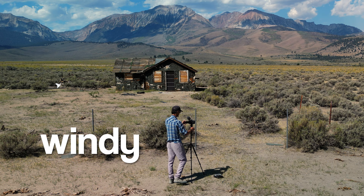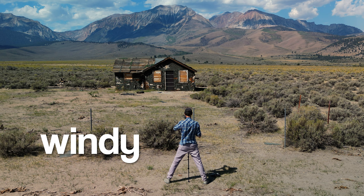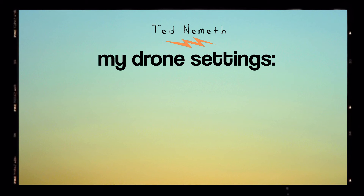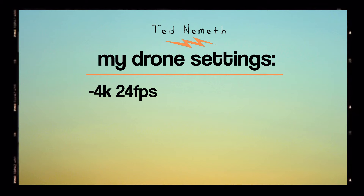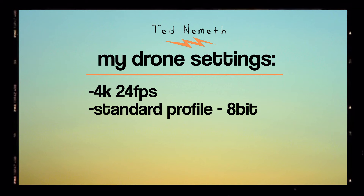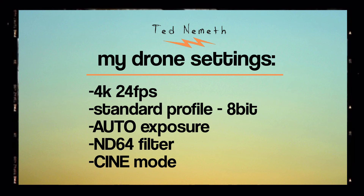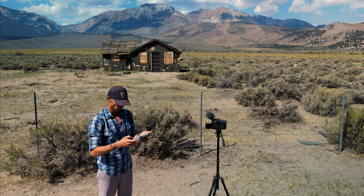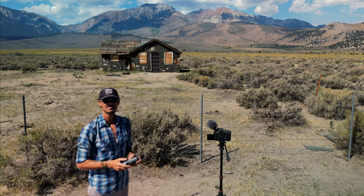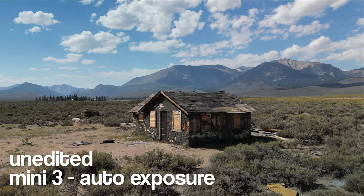It was very windy, as you can see by my Mini 3 bouncing all around — you'll notice some shaky footage in spots during this tutorial. Before we show you my favorite clip and editing tricks, I'll share all my drone settings: 4K, 24 frames per second. I shot in the standard picture profile in 8-bit — not in cine-like 10-bit because I forgot. I shot in auto exposure, used an ND64 filter for the bright midday shoot, and put it in cine mode for slow, smooth drone movement.